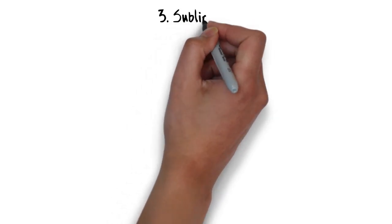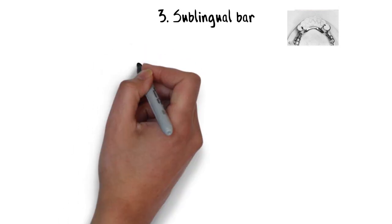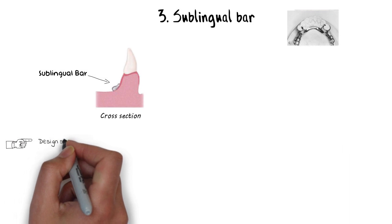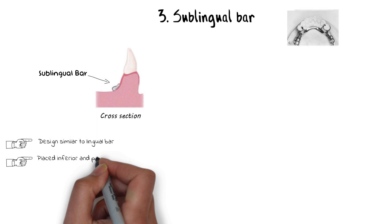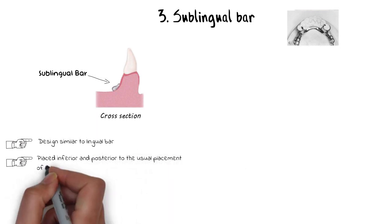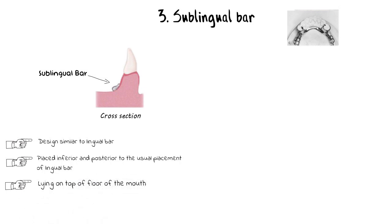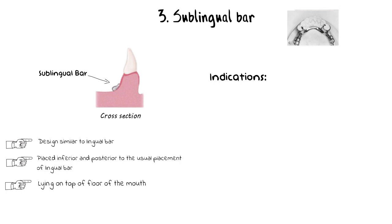The sublingual bar has essentially the same shape as the lingual bar, except the bulkiest inferior portion is located a bit more lingually, and its placement is slightly inferior and posterior to the normal lingual bar position, lying just on top of the anterior floor of the mouth. Its major indication is when the floor of the mouth is high enough that it does not allow the superior border of the lingual bar to be placed 4 mm below the gingival margins.